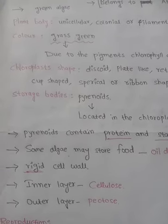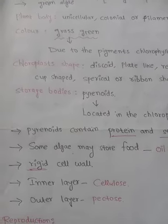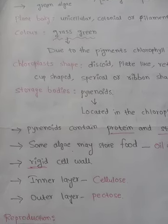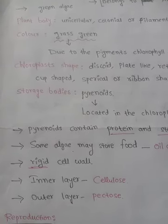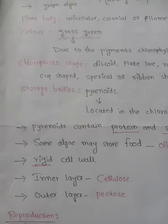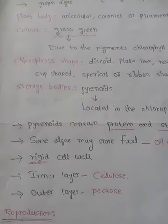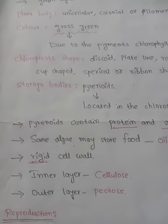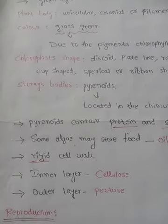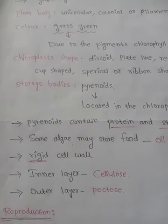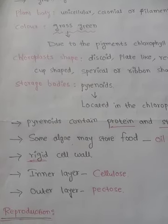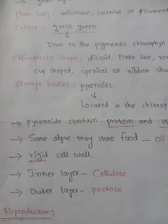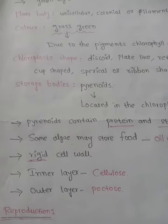These Chlorophyceae members have a rigid — meaning strong and tough — cell wall. These cell walls contain two layers: an inner layer and an outer layer. The inner layer is made up of cellulose, and the outer layer is made up of pectose.